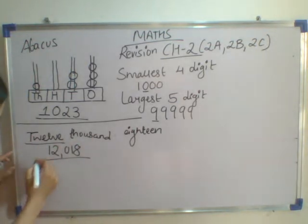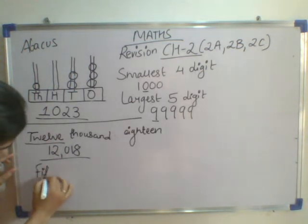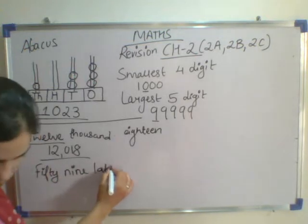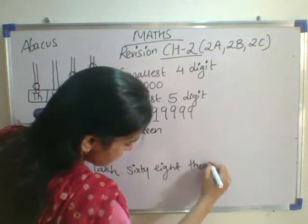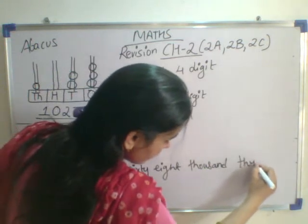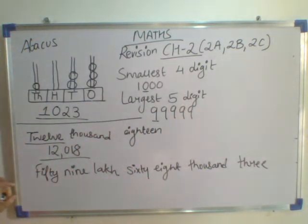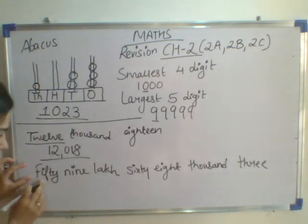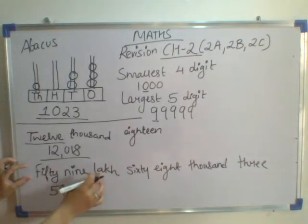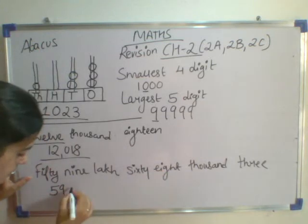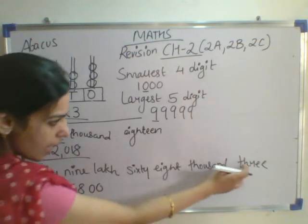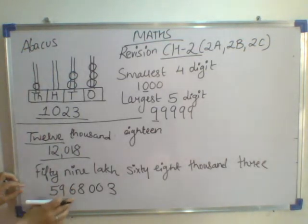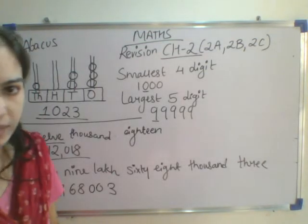Let us take a greater number: fifteen thousand and eighteen. You have to write this number in numeral. You have to start reading from the left — 59. So I am writing 59,068,000 and 3. So, I will be writing this number as 59,068,003. You have understood how to write the given number in numeral.